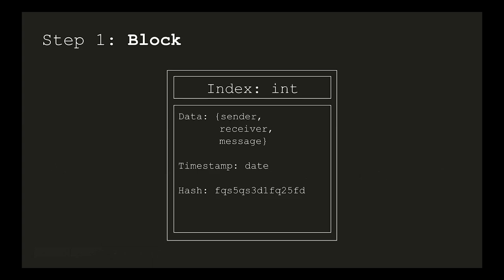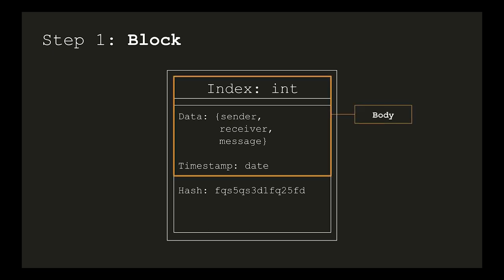The first step is to go with a single block. This is what a block should look like. We have the block index, which is an integer. The data, which can be transactions or just some information. The timestamp of when the block was created. And finally, the block hash. A hash is a string of hexadecimals that is the result of using a cryptographic hash function — in this case SHA256 — on a string. The string in this instance being the value of the entire body. This means that once a hash is calculated, because it's unique, changing anything in the body would result in a different hash, which would make the block invalid. It helps to think of a hash as a sort of fingerprint for the contents of that block.